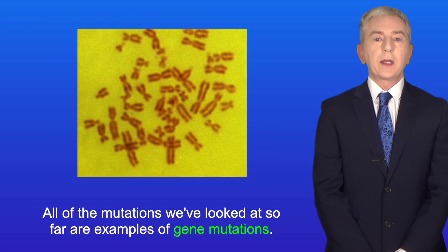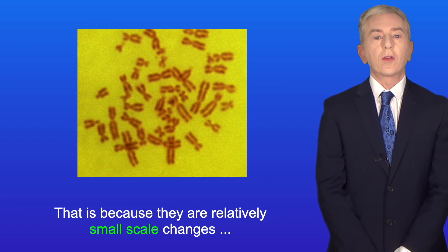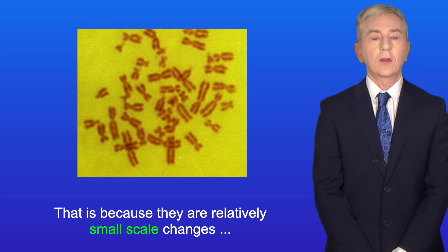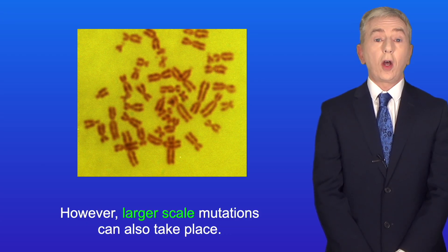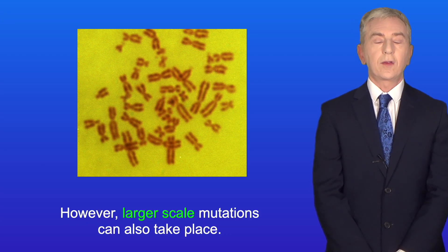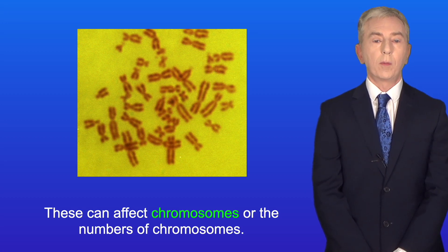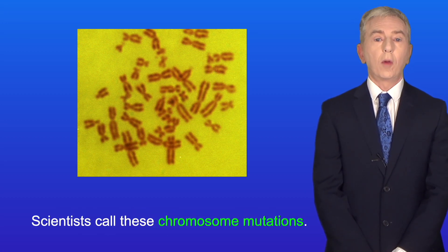All of the mutations we've looked at so far are examples of gene mutations, because they are relatively small scale changes to the nucleotides in a gene. However, larger scale mutations can also take place. These can affect chromosomes or the numbers of chromosomes, and scientists call these chromosome mutations.